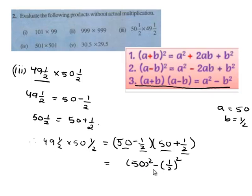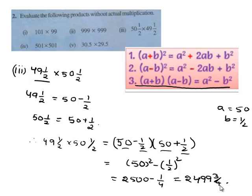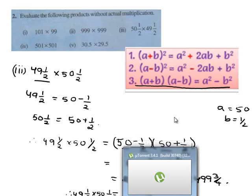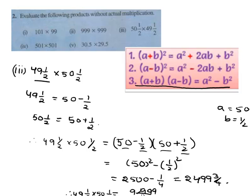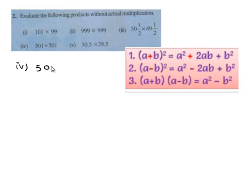That gives us 50² - (1/2)² = 2500 - 1/4 = 2499 and 3/4, which equals 9999/4. Therefore, the product of 49½ and 50½ is 9999/4. Moving on to the fourth bit: 501 times 501. Here, 501 can be written as 500 plus 1.